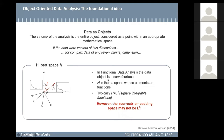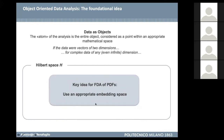The key point — similar to compositional data analysis for multivariate data — is to understand which is the correct mathematical space in which to embed our data. Similarly, as in the multivariate setting where compositional data do not live in the entire space but in the simplex, when we deal with probability density functions, we have to be concerned with the nature of the data. We must choose the correct embedding, which may not be the space of square-integrable functions L², the typical space used in functional data analysis.